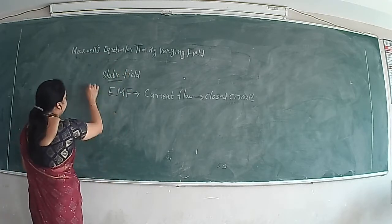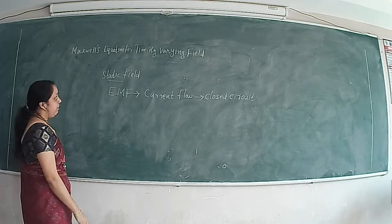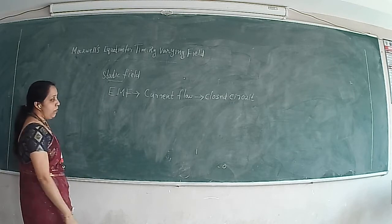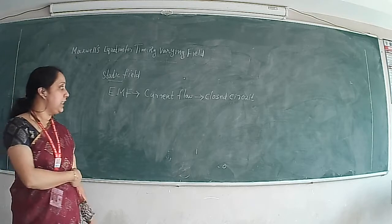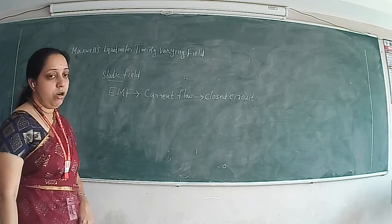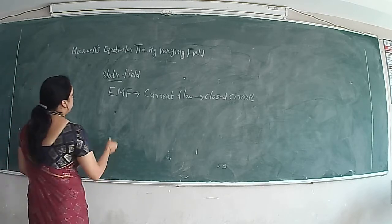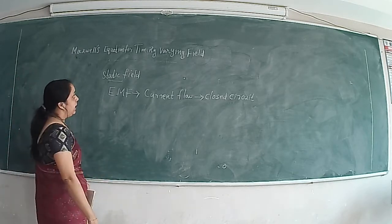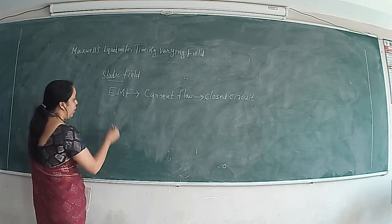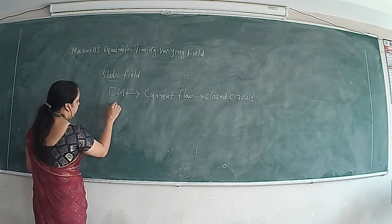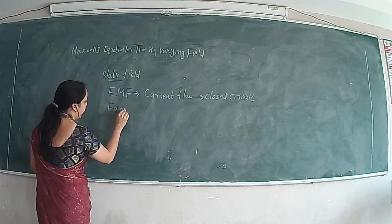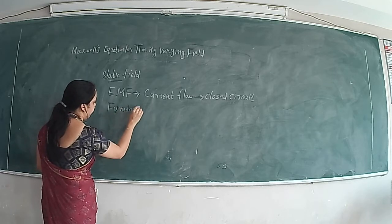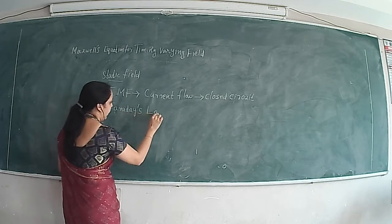So what is the main difference between static field and time varying field? Static field does not make any current flow, but time varying field produces an induced EMF, and because of the induced EMF we will be getting a current flow through a closed circuit. Most of the electrical machines are based on Maxwell's equation, which is related to Faraday's law. Faraday's law is related to the time varying magnetic field.